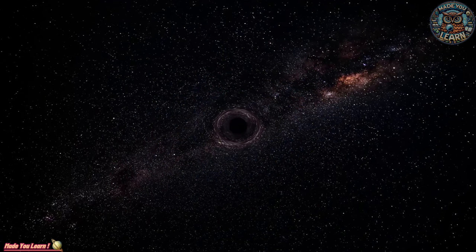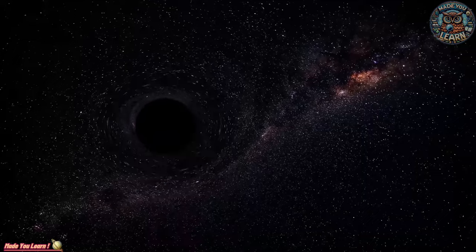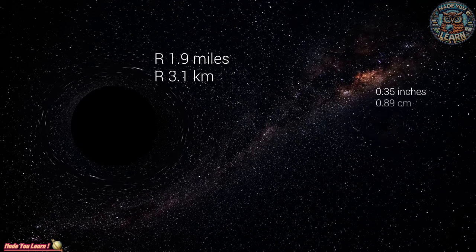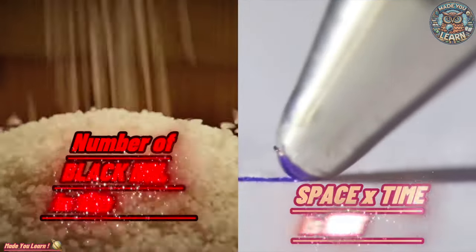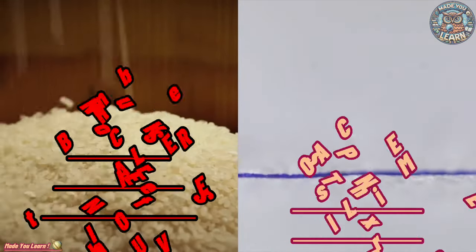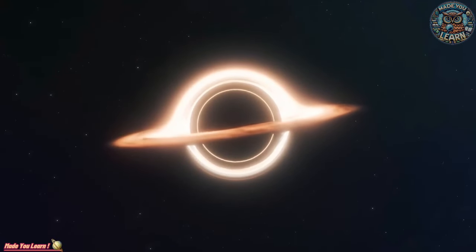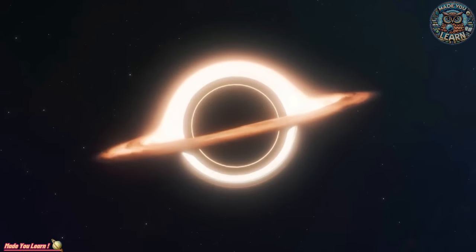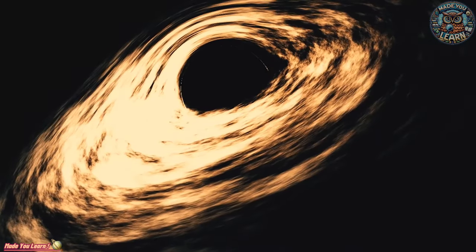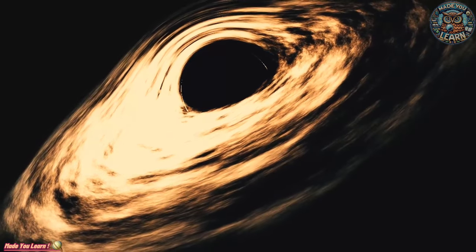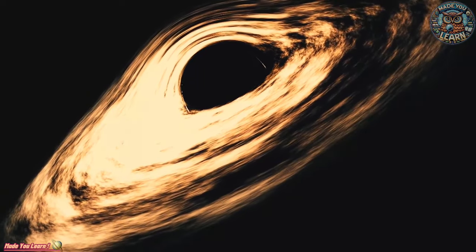The study of black holes challenges our understanding of the universe. One of the most intriguing aspects is their effect on time and space. According to Einstein's theory of general relativity, the strong gravitational pull of a black hole warps spacetime around it. This means that theoretically, time passes slower near a black hole compared to farther away. This warping of spacetime is not just theoretical. It has observable effects, such as the gravitational lensing of light from stars and galaxies behind a black hole, creating a visible ring of light known as an Einstein ring.